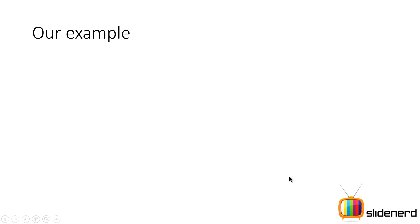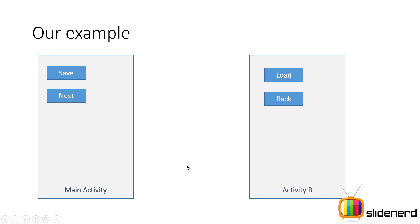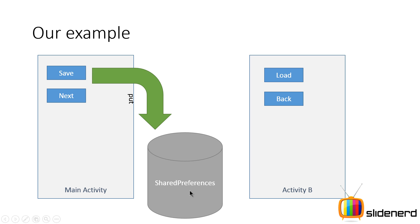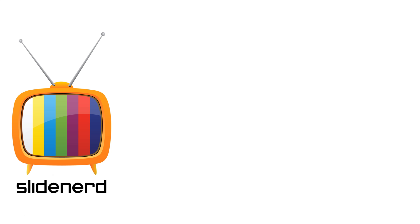Now let's talk about our simple example, which will be running in the next video. We have two activities, A and B. There is a save button which is going to put some data inside the Shared Preferences file, and there is a load button inside Activity B that is going to get the data from the Shared Preferences file. We will be seeing this in action in the next video. If you like what you saw, please like and share this video, and let us know which data storage option you prefer in Android. I'll catch you guys in the next video — have a nice day.